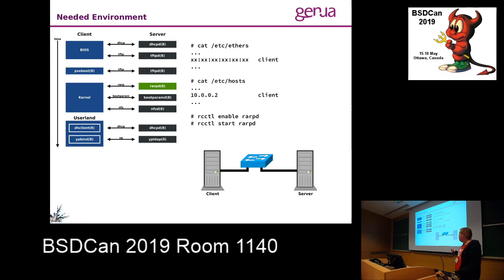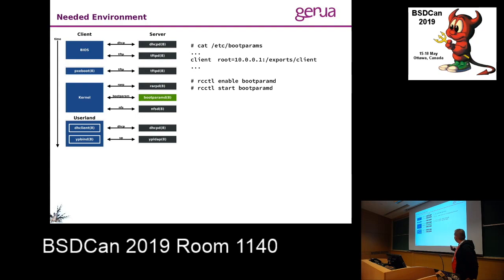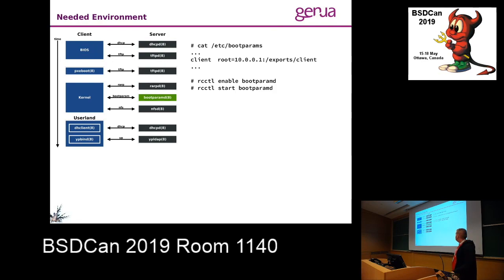Now we're in the state where we have an IP address, but where is our root filesystem? Sun systems defined a protocol for this called bootparam. We have bootparamd which serves this — it answers the protocol question 'where are my boot parameters?' The bootparamd knows for our client where the root filesystem is: over NFS at a specific path on our server. All you have to do is add a line for the client's hostname. When a request comes in from the kernel, bootparamd sends back the NFS path. Now the kernel knows: there's my root filesystem. Let's mount it.